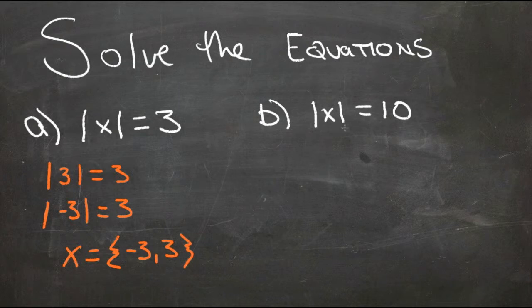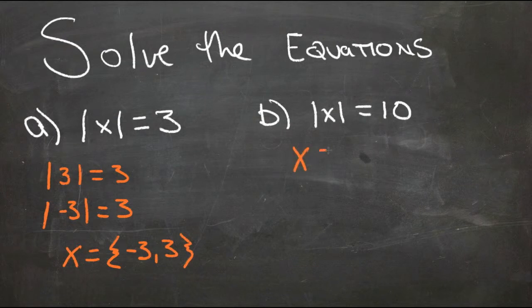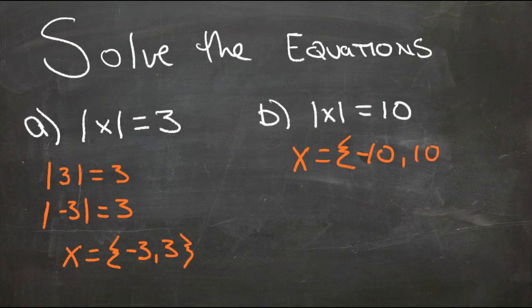Now here we have the absolute value of x is equal to 10, so that tells us that x could be the set that includes negative 10 or positive 10. Either of those two numbers, the absolute value would be 10.